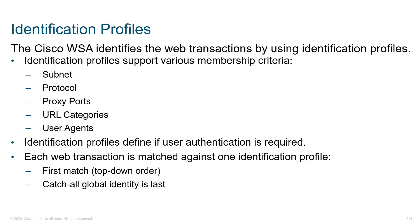The identification profiles are a huge part of this — they're really our condition for defining who the rules apply to. They can be done based on subnet, protocol, proxy ports, URL category, and user agents. The identification profiles also define if user authentication is required. Web transactions are matched against identification profiles in a top-down manner: if you don't match the first list, you try the second, then the third, and eventually you hit a default catch-all list at the bottom.